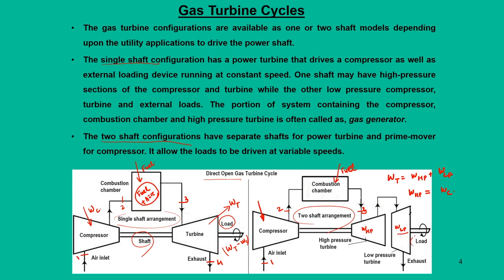The compressor power requirement is achieved through the high pressure turbine, and the combustion products are then further expanded in another turbine. So essentially, the outside load requirement is achieved through the low pressure turbine. The advantage of the two shaft arrangement is that in the single shaft arrangement we cannot run the system at varied load, but here since the two shafts are decoupled, the compressor and high pressure turbine run at the same RPM while the turbine for load requirement can run at different RPM, allowing loads to be driven at variable speeds.